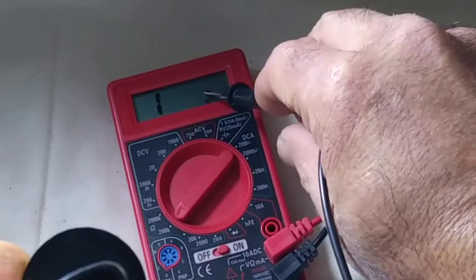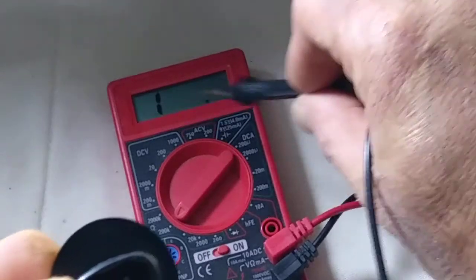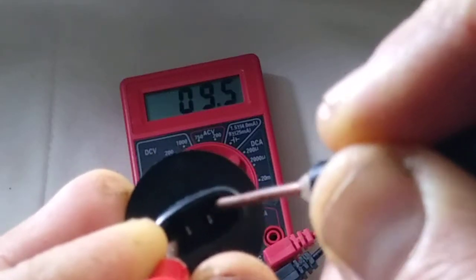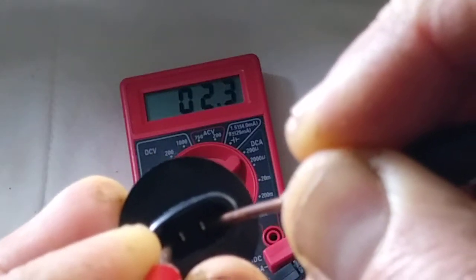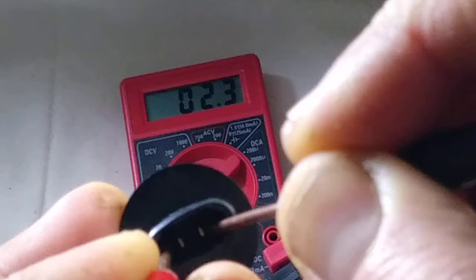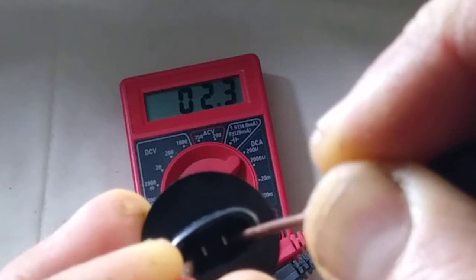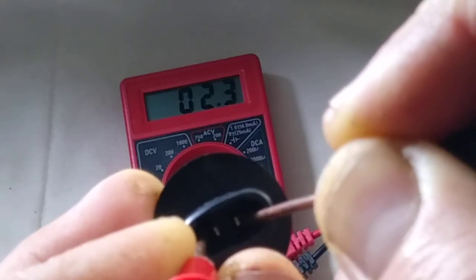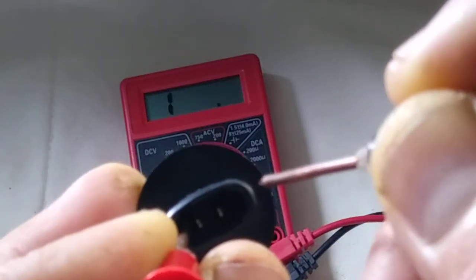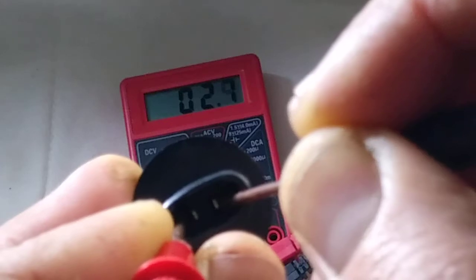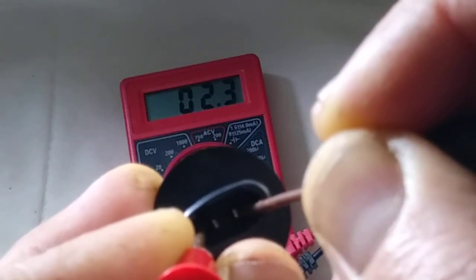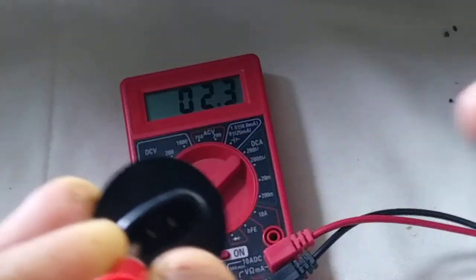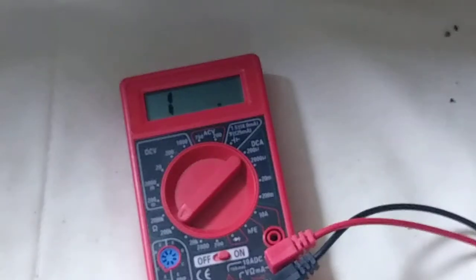It should be two or three point something. Let's touch now. What's that? Zero two point three, 0.23. This is good, very nice sensor. It should be up to three, but this goes all the way to two point three. Yeah, this is a nice good sensor.